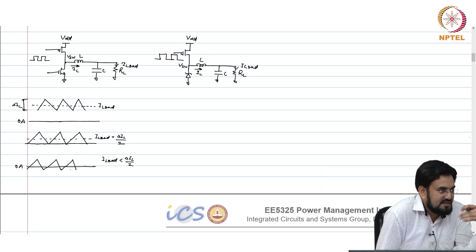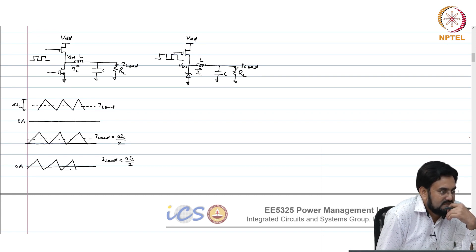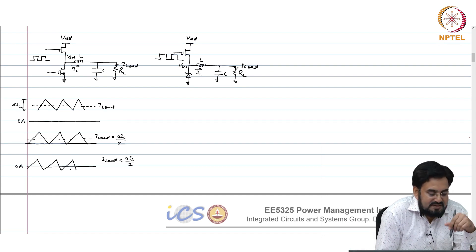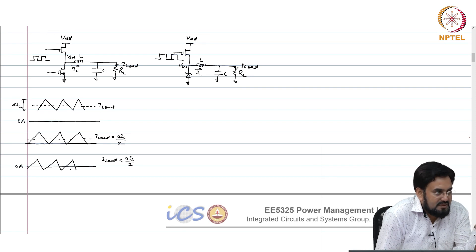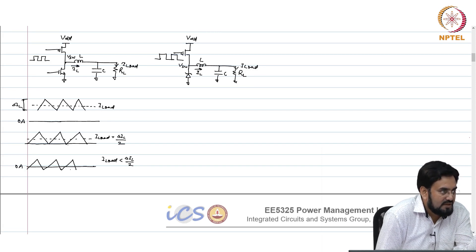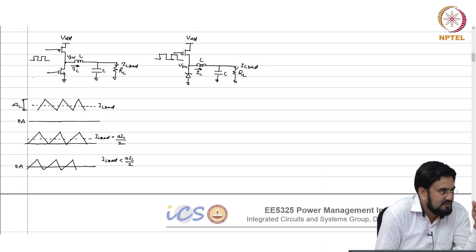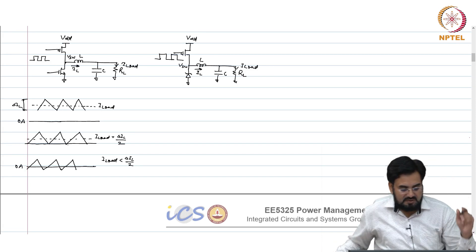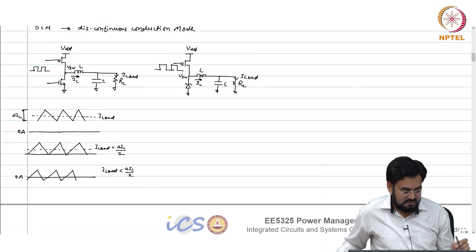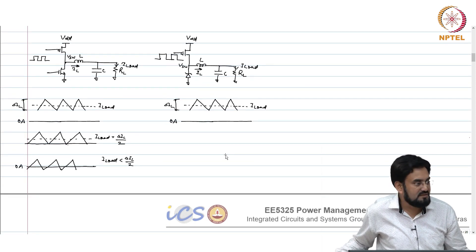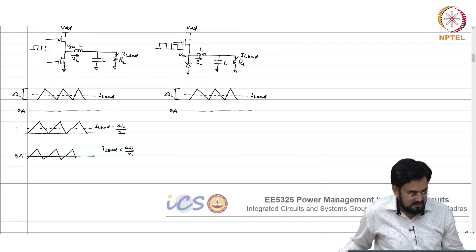Which means if it is less than 0, let's say negative, there is no issue. That is bidirectional. So if you operate this in CCM, it does not matter what the load current is. It will work for both negative and positive load current, even there is 0 load current, because this bottom switch will take care of that. But what would happen here?